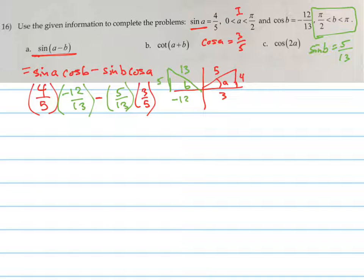My common denominator is 5 times 13, which is 65. So I've got 4 times negative 12, which is negative 48, minus 15 over 65.